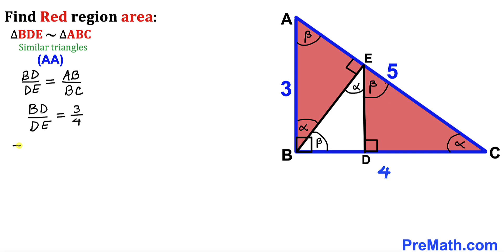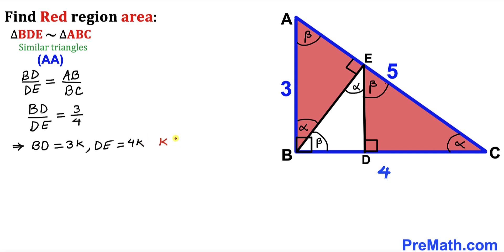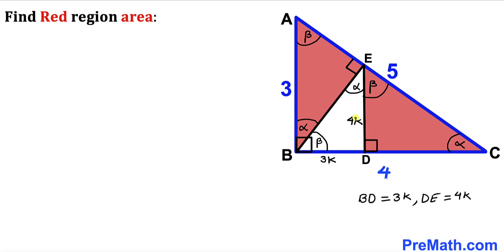Since the ratio of BD to DE equals 3 to 4, we can write BD as 3K and DE as 4K for some constant K. So segment BD is 3K and segment DE is 4K.